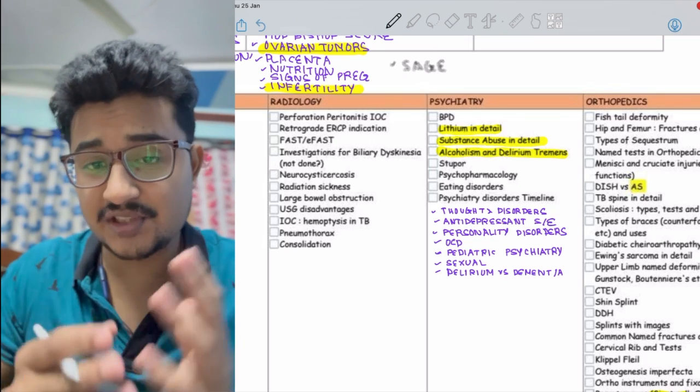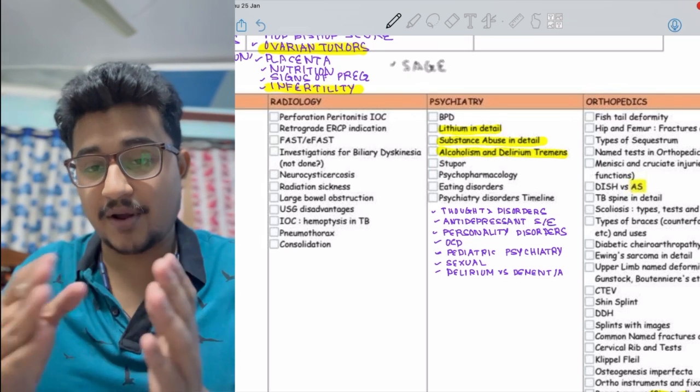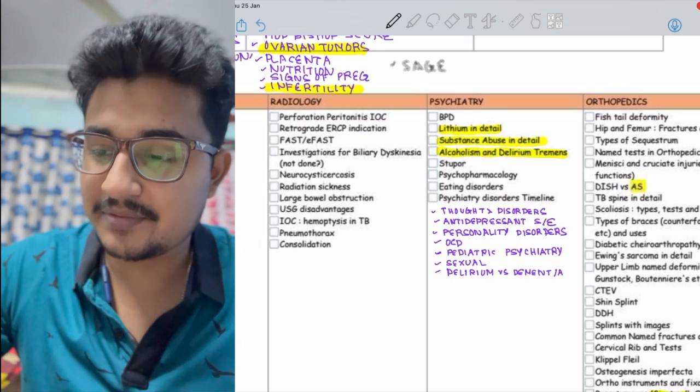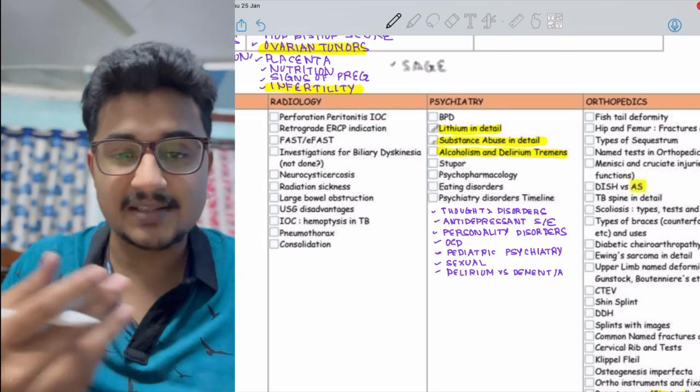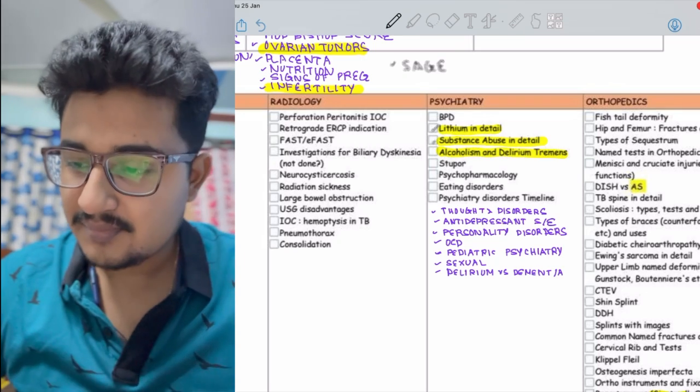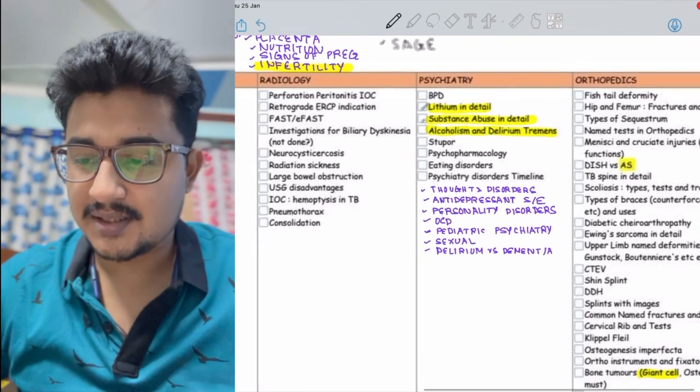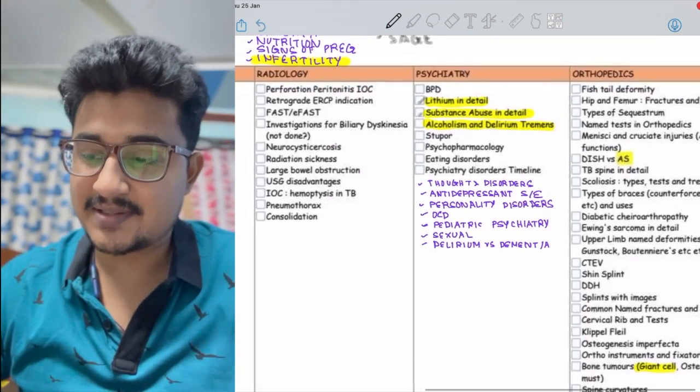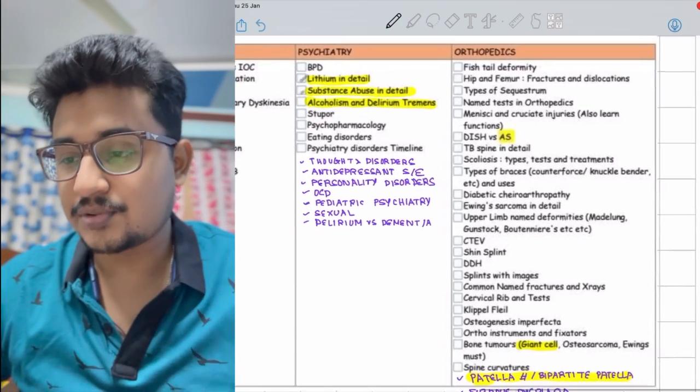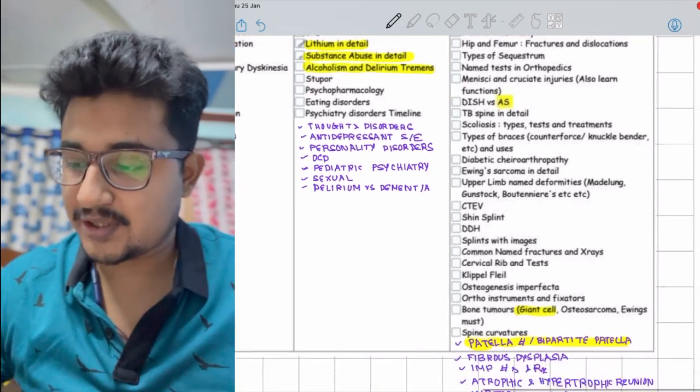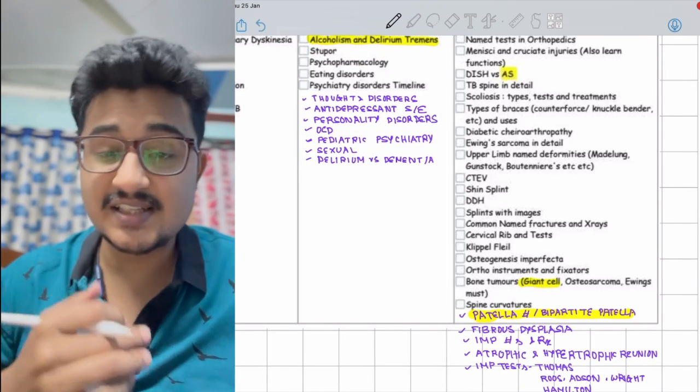In psychiatry, the psychology part is more asked in INICET, and for NEET PG perspective more of psychopharmacotherapy is asked. For INICET, lithium is the hot favorite as I've said. Substance use disorder because it's growing and the market is huge. Antidepressant side effects, personality disorders - these are sometimes asked.